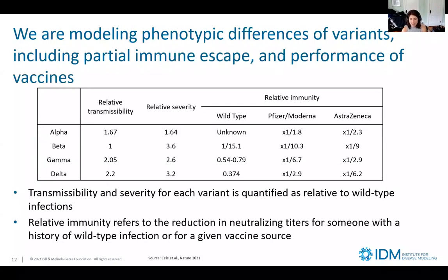We model the phenotypic differences of variants, including relative transmissibility, relative severity, and importantly partial immune escape. Here's a table of default parameters for four variants of concern: alpha, beta, gamma, and delta — also known as B.1.1.7, B.1.351, P.1, and B.1.617. Alpha is 1.67 times more transmissible than wild type — per contact there is a higher chance of transmission — and it produces more severe disease. The nomenclature has been changing a lot.